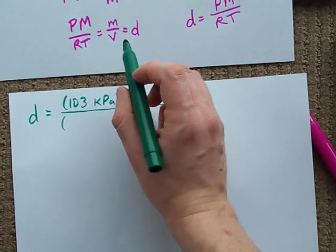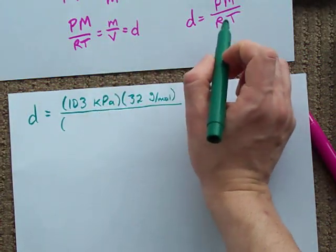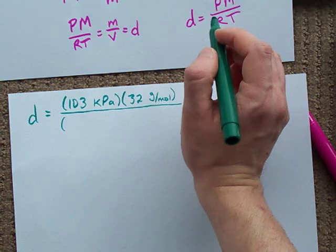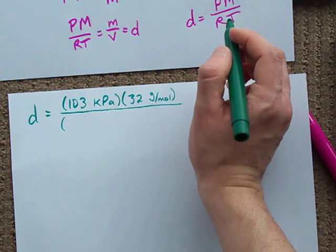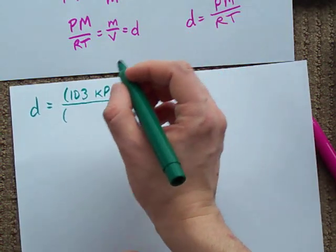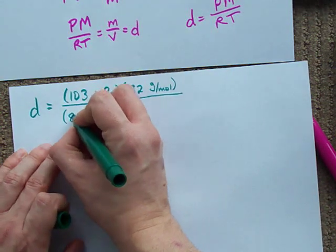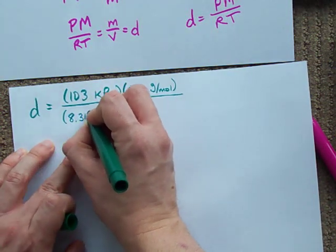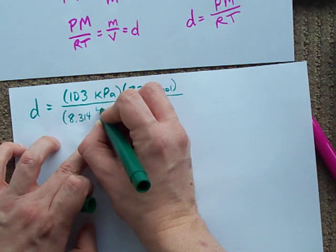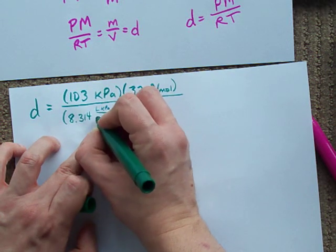R. Now, I'm going to put my volume in liters and my pressure in kilopascals, which means the relevant R that I want is 8.314 liters kilopascals per mole Kelvin.